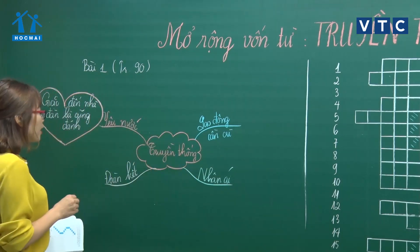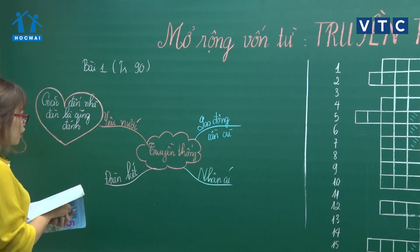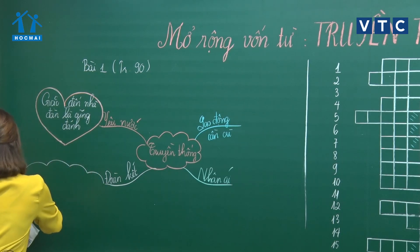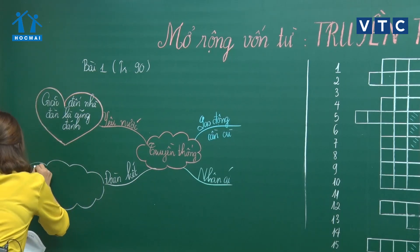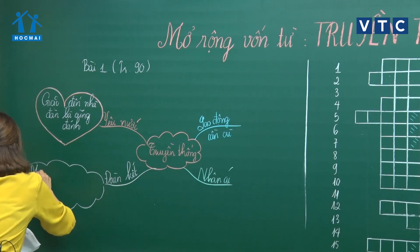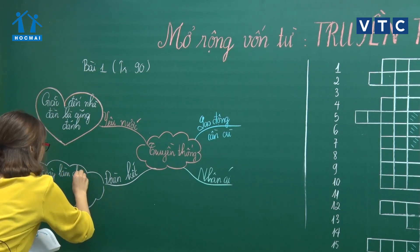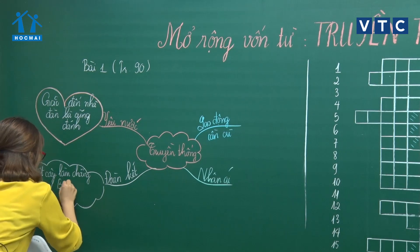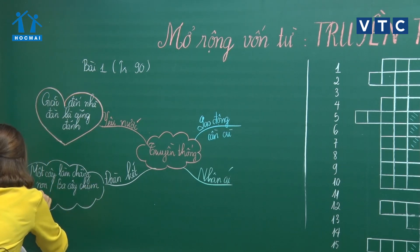Nội dung thứ 2 là tinh thần đoàn kết. Cô có thể viết trong một cái đám mây. Câu ví dụ về đoàn kết: 'Một cây làm chẳng nên non, ba cây chụm lại nên hòn núi cao.' Ngoài ra còn có: 'Bầu ơi thương lấy bí cùng, tuy rằng khác giống nhưng chung một giàn.' Hoặc: 'Khôn ngoan đối đáp người ngoài, gà cùng một mẹ chớ hoài đá nhau.'